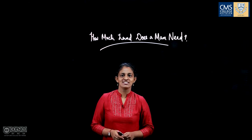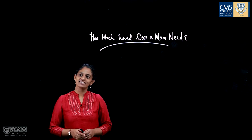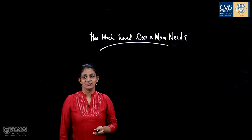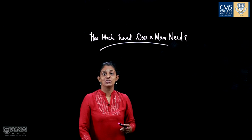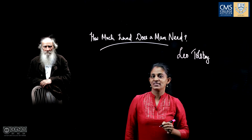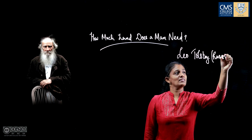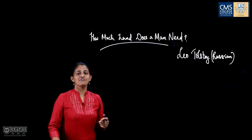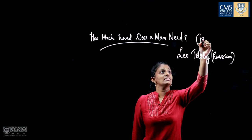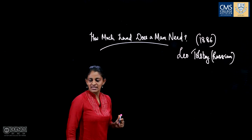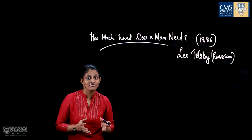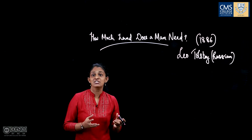How much land does a man need? Let's have a look at the short story 'How Much Land Does a Man Need?' written by Count Lev Nikolaevich Tolstoy, popularly known as Leo Tolstoy. He's a Russian writer and a very prominent figure in English literature. This particular piece of work was published in the year 1886. Leo Tolstoy brings out a realistic portrayal of life, showing us the corruptive power of greed.